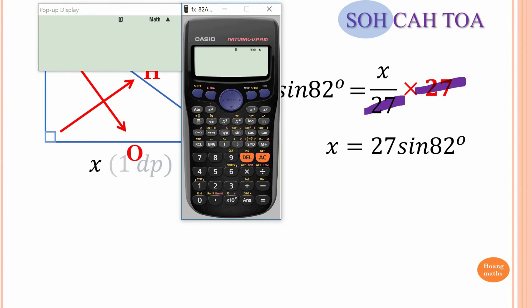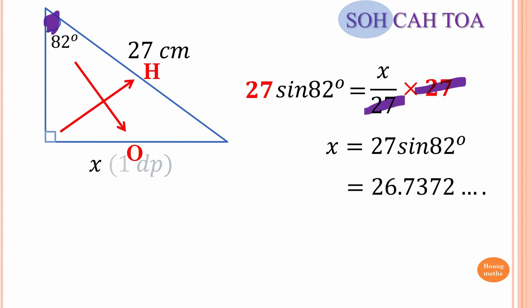Put that in the calculator: 27 × sin(82°). Make sure your calculator is in degree mode. That gives 26.7372 and so on. We round to one decimal place, so we look at the digit after 7, which is 3 — less than 5 — so the answer is 26.7 centimeters.